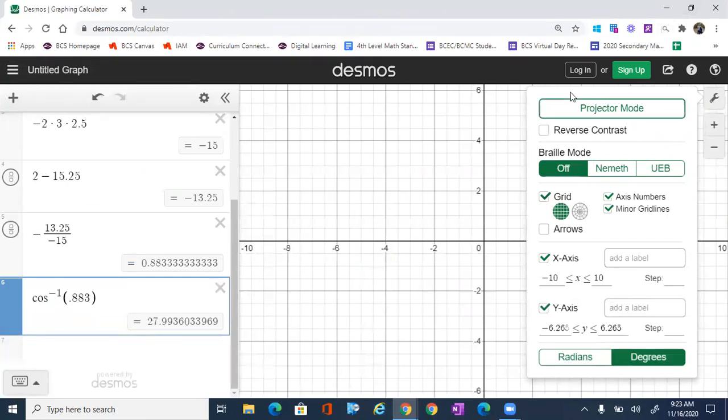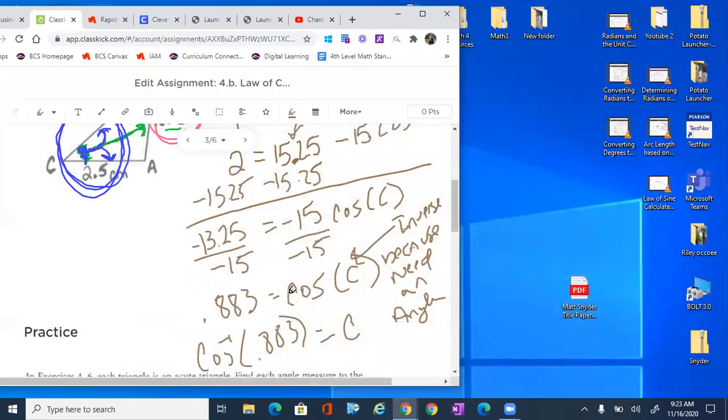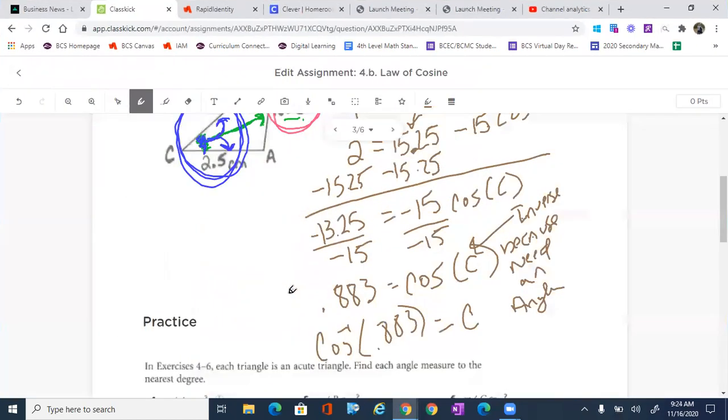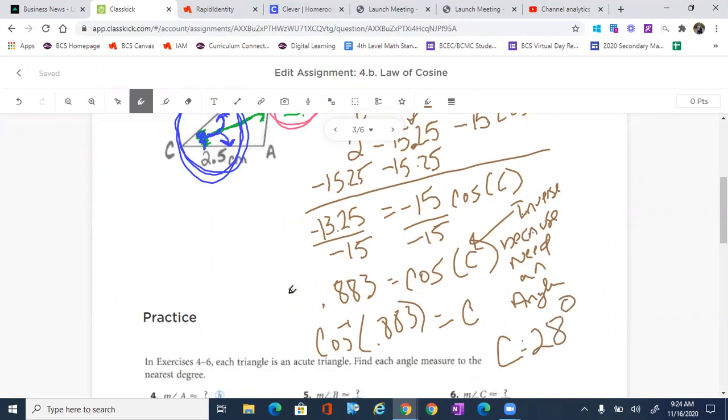So this is gonna be C equals to 28. C equals to 28, and it is an angle, 28 degrees.